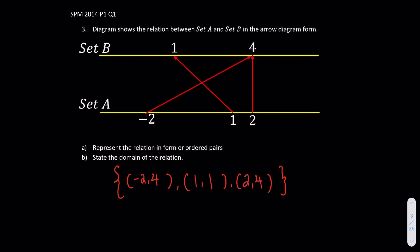So this is what we're showing the relations. Next one, state the domain of the relations. So domain, most of the times, is the way we started. We start from set A, right? So this is our domain. So our domain now, remember domain is also a set. It consists of negative two, one, and two. So we are done for question number three.